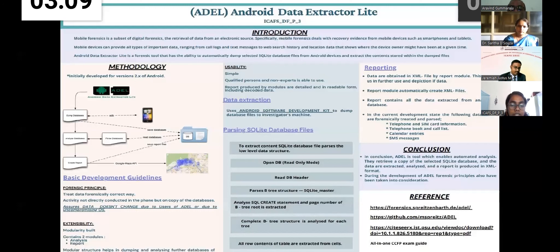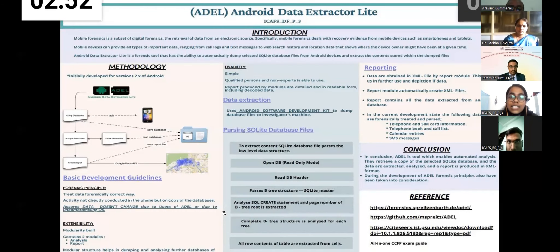Forensic principality mostly talks about how the data has to be handled and the data has to be analyzed in a copy of the database but not directly on the device. The extensibility tells that the program is being developed in a modular form and it contains two modules, the analysis and the report part. Usability talks about how the system should be simple enough for a person who is a non-expert should be able to use and understand the report being produced.